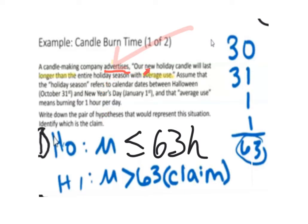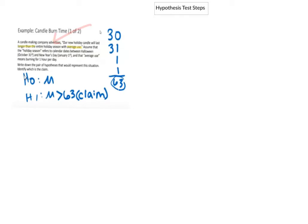This scenario is a little bit hard to see on the slides, but it's basically about setting up the hypotheses for this situation, testing the claim, and going through the seven hypothesis steps. An earlier video set up the hypotheses for this problem. The candle making company advertises: our new holiday candle will last longer than the entire holiday season with average use. Assume the holiday season refers to calendar dates between Halloween and New Year's Day, and that average use means burning for one hour per day.